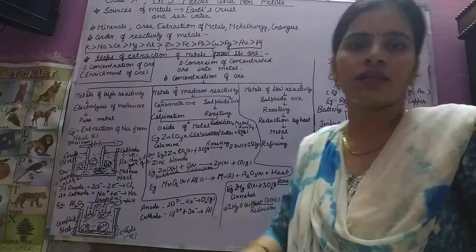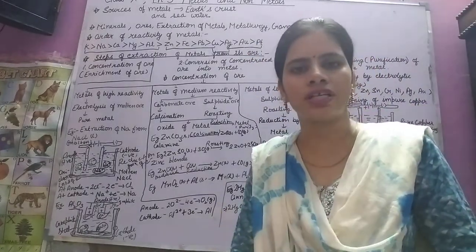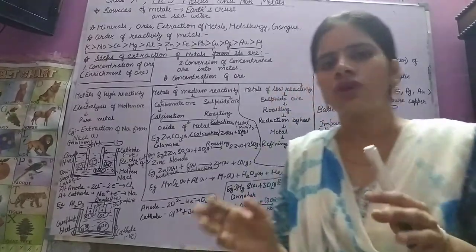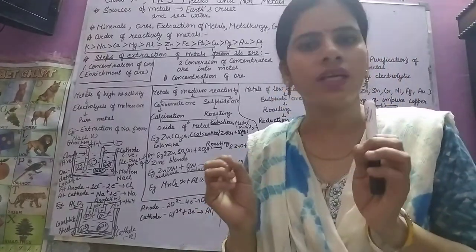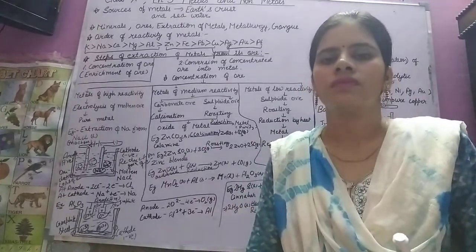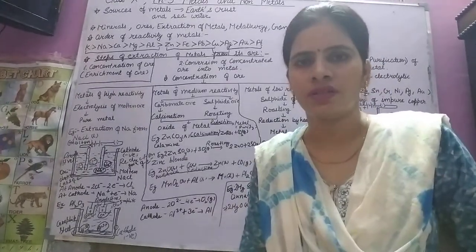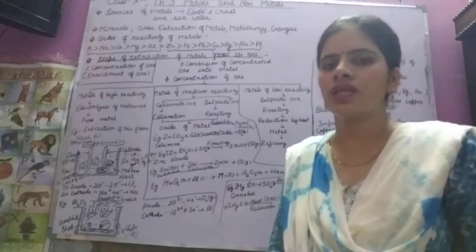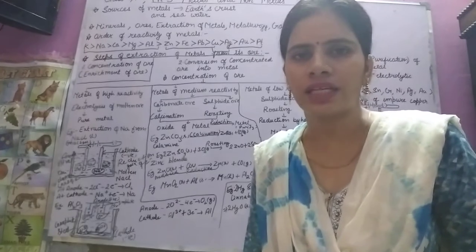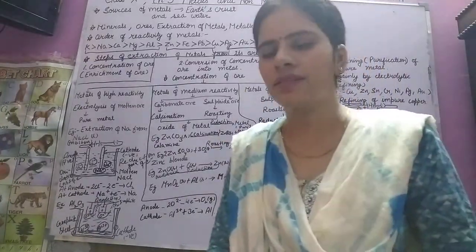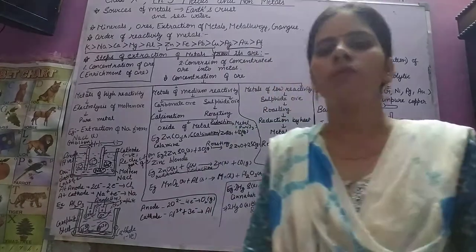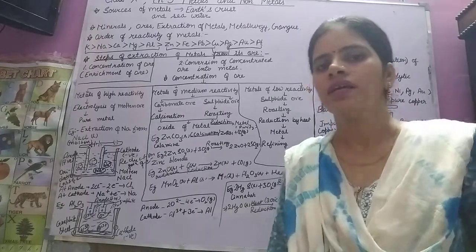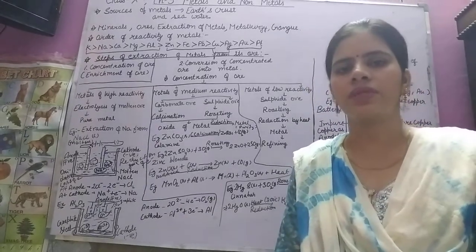Gang refers to the impurities present in minerals or ores. We should not use metals with impurities, so we must purify the metals. Gang includes impurities like mud, sand, rock particles, lime, and mica. These impurities must be removed from the minerals.